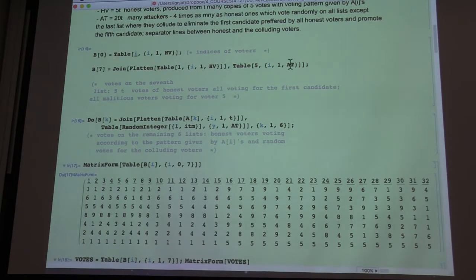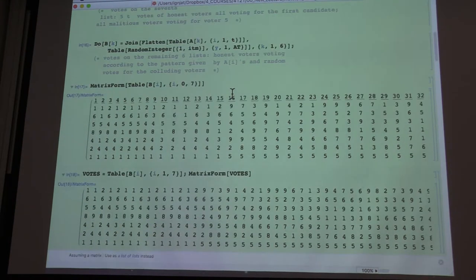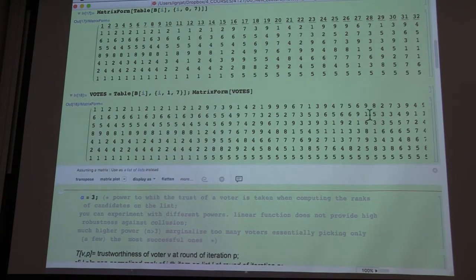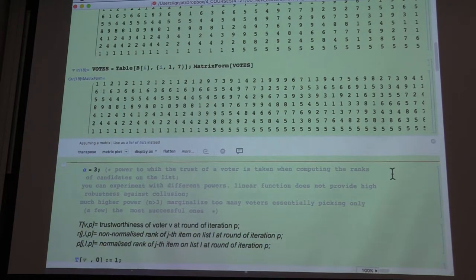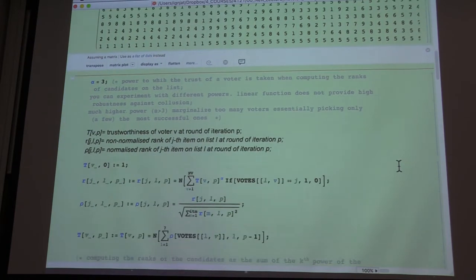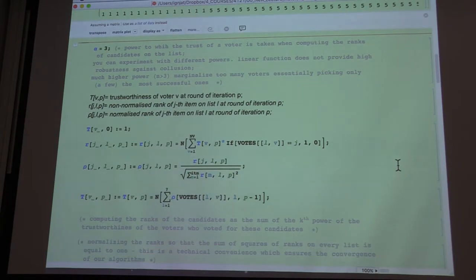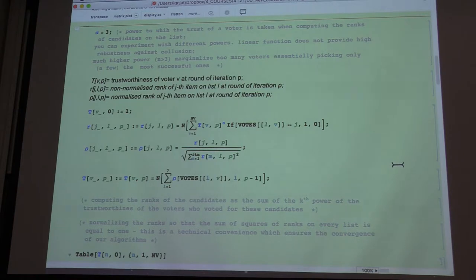the polluting voters vote for candidate number five while the regular voters, honest voters vote for candidate number one. So this is the matrix of voters that you get. So as we saw last time, how does the procedure work?